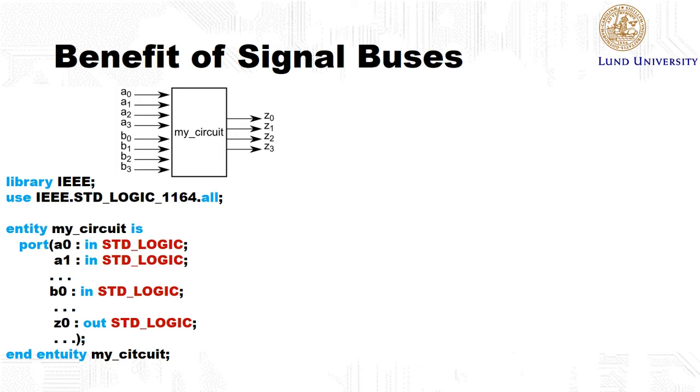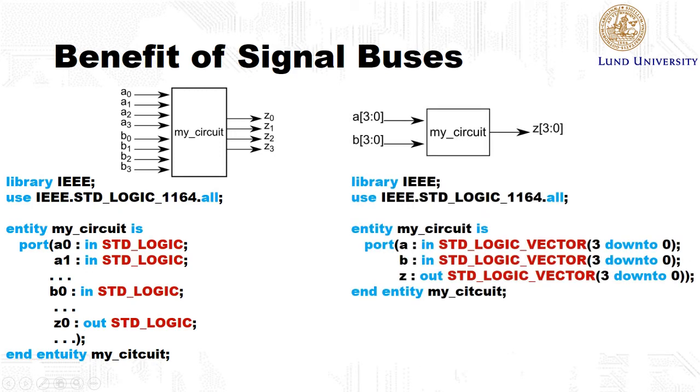Now if the inputs A0 to A3 represent for example an integer value that is binary coded, then it makes more sense to group this signal together to form a signal bus or vector. So now the signal A is 4 bits wide, and so is B and Z.